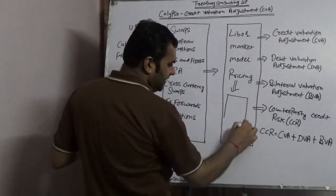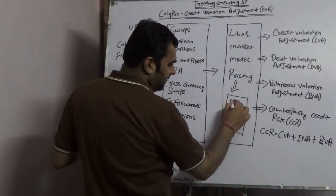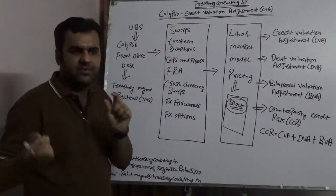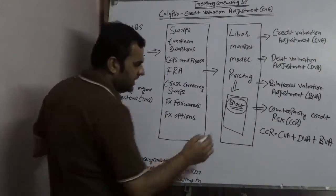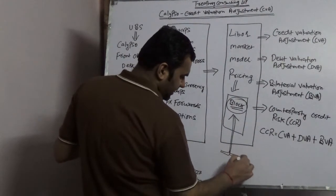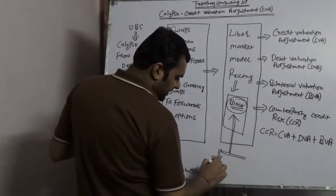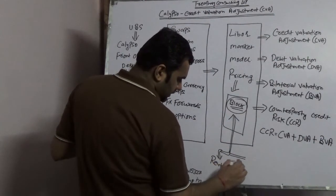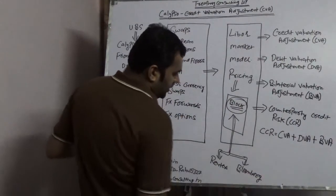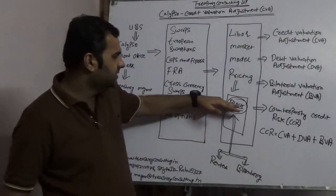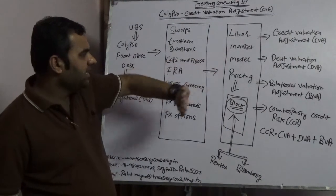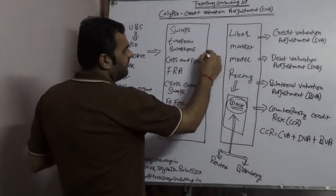Let me write here: you would have a block here in Calypso. The feed is coming from Thomson Reuters or could be from Bloomberg. Assume the feed is coming from Reuters or Bloomberg. This feed is coming into this block, which is integrated with the LMM model, the LIBOR market model, and that market model is integrated with all kinds of foreign exchange instruments.